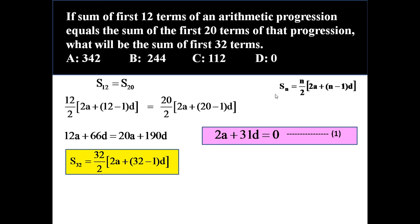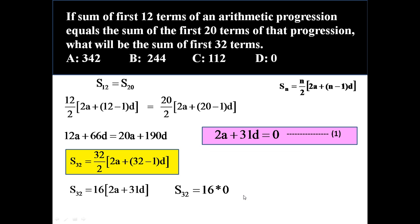Now for S32: putting n = 32, S32 = (32/2)(2a + 31d) = 16 × (2a + 31d). Since 2a + 31d = 0, S32 = 16 × 0 = 0.